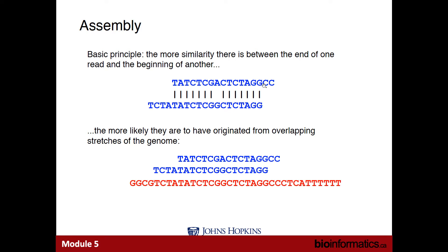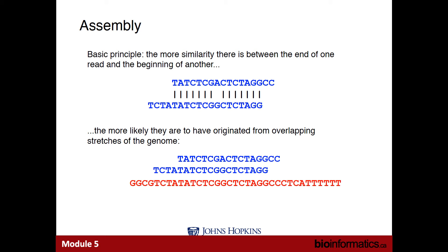What we're looking for are these overlapping reads where the end of one read matches the beginning of another read. High levels of sequence similarity between overlapping reads might indicate they come from the same position of our genome. We can then merge the sequences together to do a little assembly of that region of the genome, and if we do this for all reads, we can come up with a reconstruction of our genome.